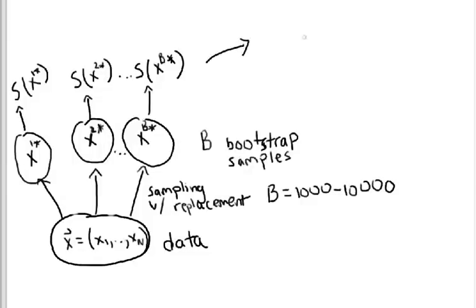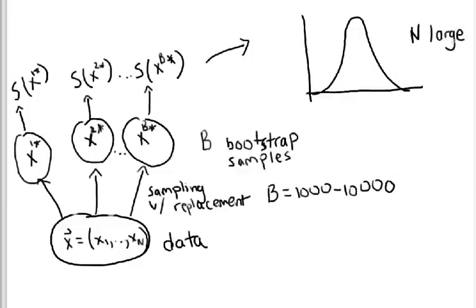And from our 10,000 or 1,000 statistics that we've computed from our bootstrap samples, we now get a, you can plot a histogram of those samples. And if n is large where n was the original length of our samples, then we'll get something that looks very Gaussian, just by the central limit theorem. We have some mean and some width here.